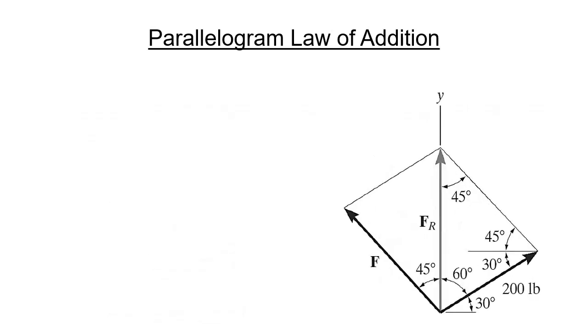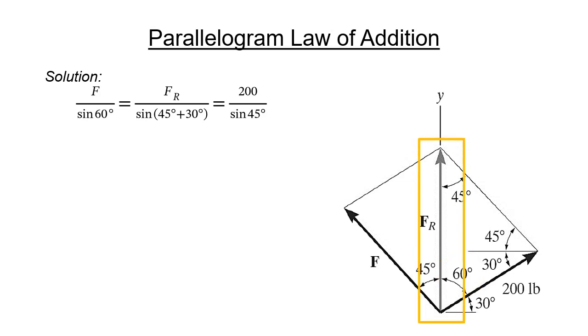We can now solve the problem by calculating the magnitude of both vector F and vector F sub R. We can use the law of sines from the triangle in this side of the parallelogram. Using sine law, the magnitude of vector F is divided by the sine of the opposite angle of 60 degrees. This is equal to the magnitude of F sub R divided by the sine of the sum of angles 45 and 30 degrees, as well as the 200 pound force divided by the sine of opposite angle 45 degrees. Calculating the equation, we get 244.95 pounds for the magnitude of F, and 273.2 pounds for the magnitude of F sub R.